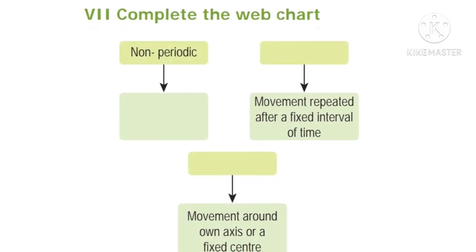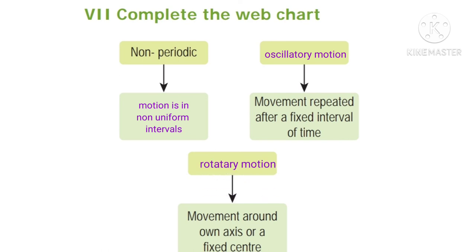Complete the web chart. Non-periodic motion: answer — motion in non-uniform intervals. For the box about movement repeated after a fixed interval of time: answer — rotatory motion. Next box: movement about an axis or a fixed center.